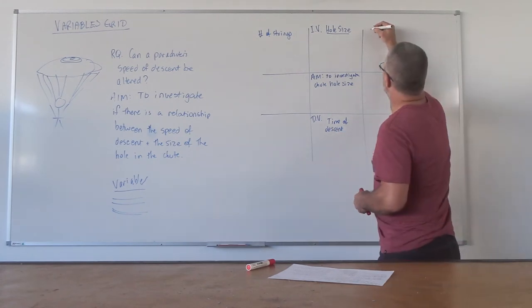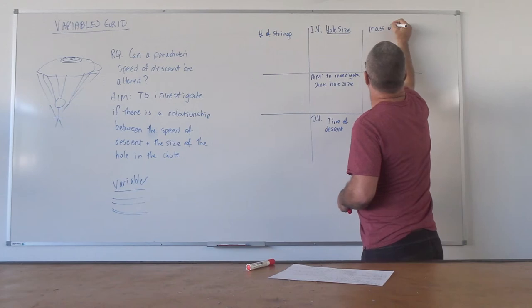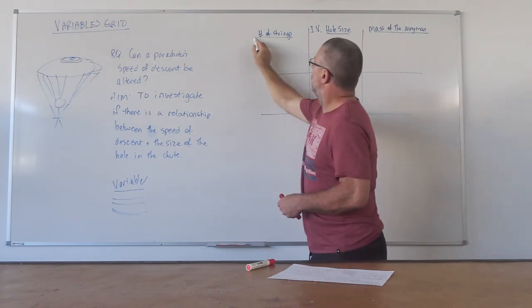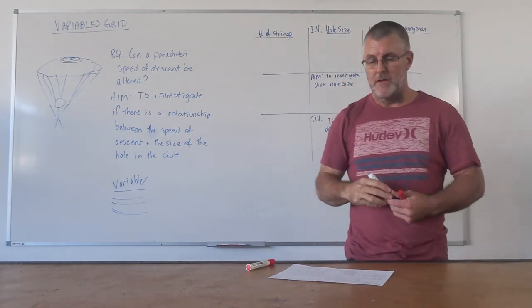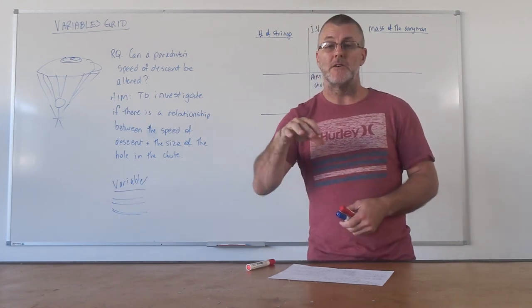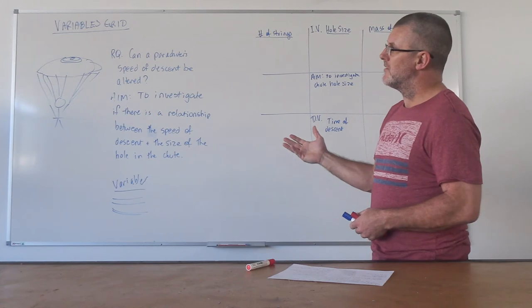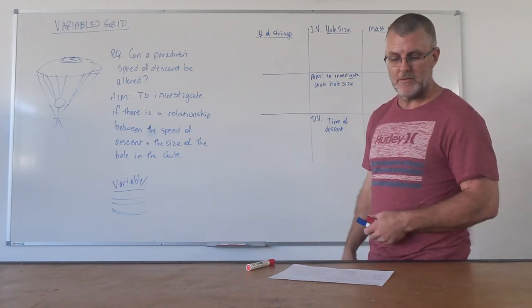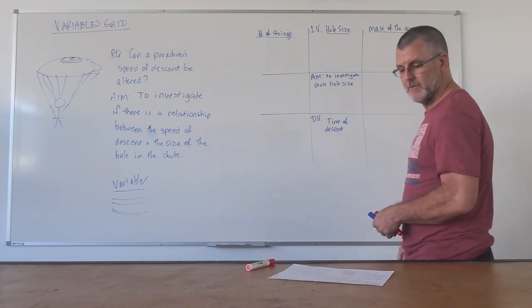Certainly though, the mass of the army man, that might be another variable that we could use. We know that falling objects, it shouldn't matter on the mass, it shouldn't affect the rate of descent. But in this case here, the mass might because of the terminal velocity, the concept of terminal velocity. So mass might make a difference.